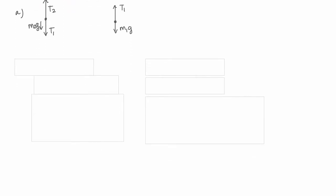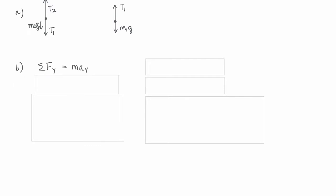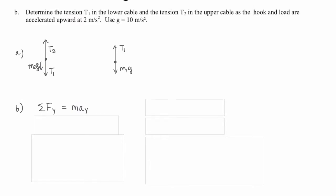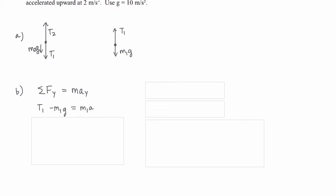So let's start with the load, and we'll start by writing out Newton's second law, which says that the sum of all forces is equal to mass times acceleration in the direction of motion. So, plugging in our two forces acting on the load, we're going to have tension 1 minus M1g equals M1a, and that's because the load is moving upwards.